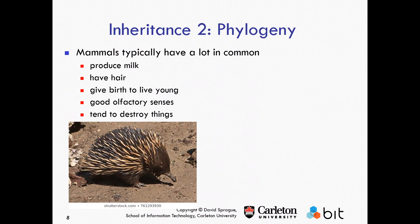There's the echidna — the spiny anteater from Australia. Does it give birth to live young? Nope — it lays eggs. But it's a mammal: it makes milk, it has hair, it makes eggs. Same with a platypus. Some have pouches, like a kangaroo — marsupials give birth to live young but they're not fully developed. The echidna has a great sense of smell, eats ants, and smells out ant colonies. And it probably destroys things — at least ants would agree.